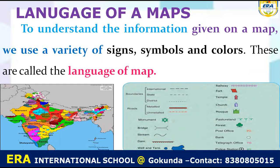To understand the information given on the map, we use a variety of signs. You can see that there are different types of signs, different types of symbols, and different types of colors. These different types of signs, symbols, and colors together are called the language of maps.